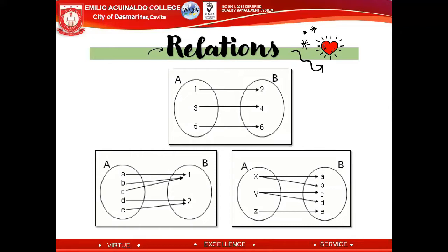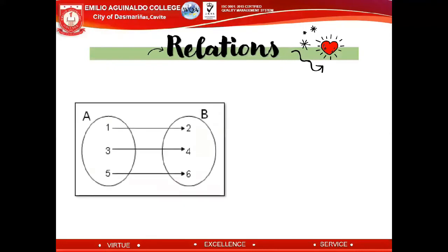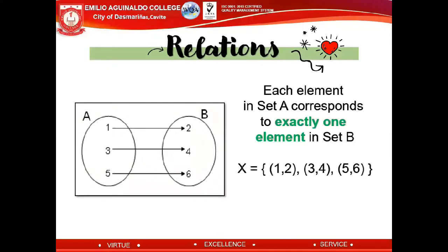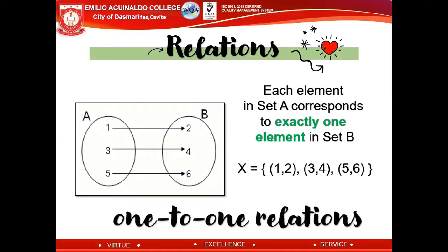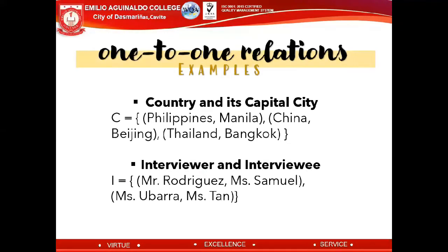Just like any other relationships, numbers have different types of relations too. On your screen, there are three. First, this relation: each element in set A corresponds to exactly one element in set B. You have set X as 1 is to 2, 3 is to 4, 5 is to 6. Therefore, that relation is called a one-to-one relation. For example, country and its capital city: Philippines is to Manila, China is to Beijing, Thailand is to Bangkok.